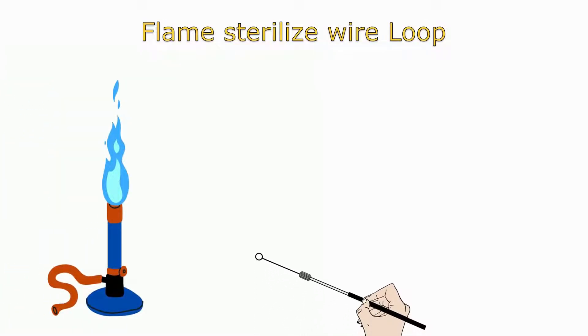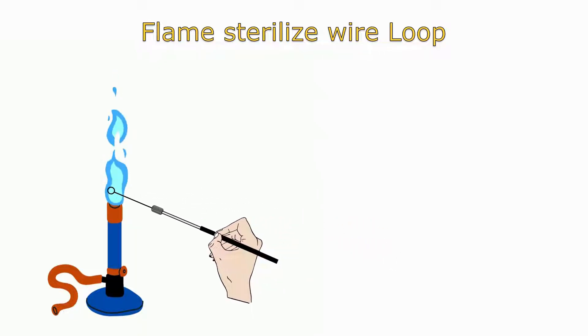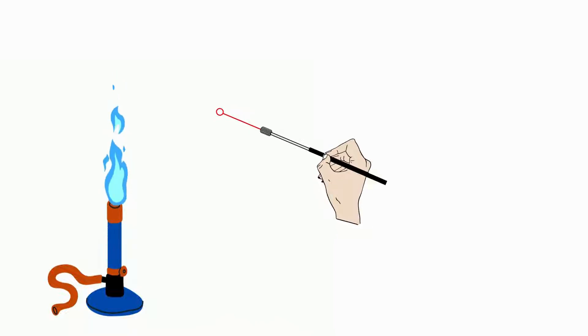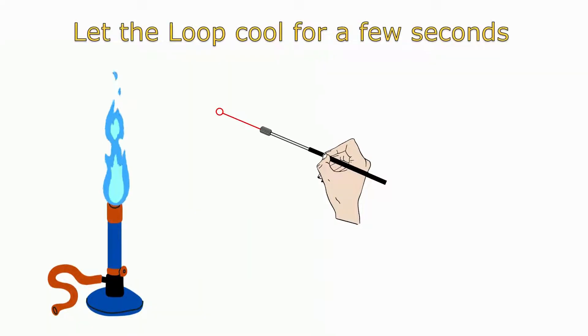The first step in this technique is flame sterilization of the wire loop. Hold the loop in the flame for a few seconds. When the wire loop is red hot, hold the loop away from the flame and allow it to cool for a few moments.